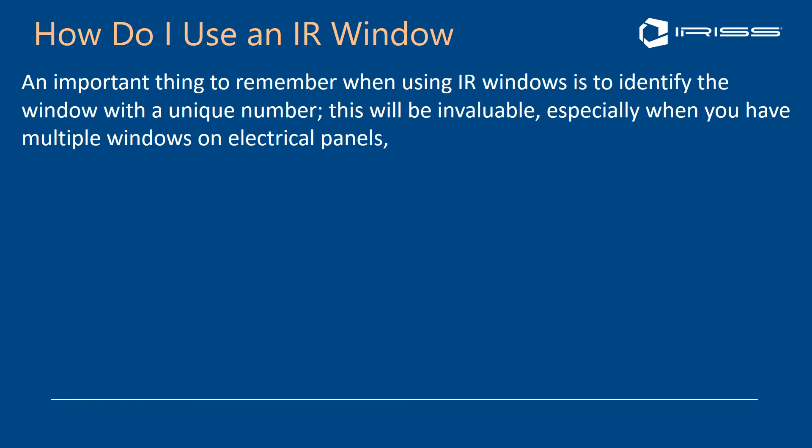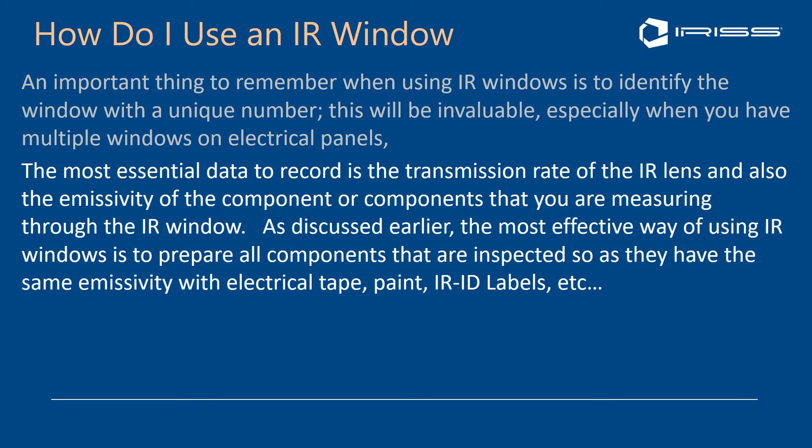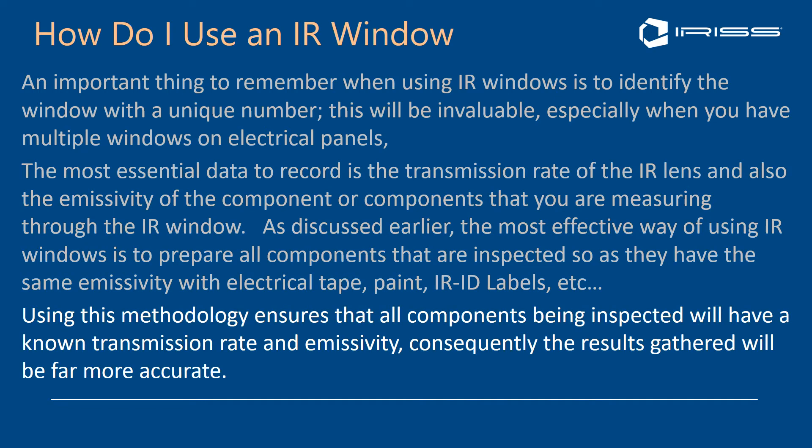An important thing to remember about infrared windows is that the identification of the window system itself should have a unique number — this is invaluable when you have multiple windows on multiple electrical panels. The most essential data to record is the transmission rate from the infrared lens, as well as the emissivity of the components you want to inspect. The most effective way of using an infrared window is to prepare all inspected components with the same emissivity using electrical tape. This ensures all components have a known transmission rate and known emissivity, making inspection results far more accurate.